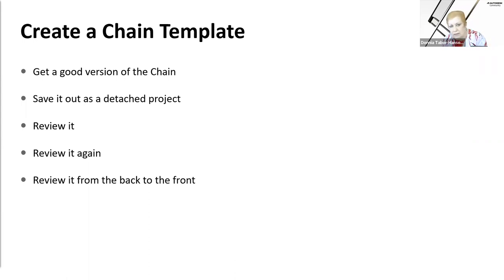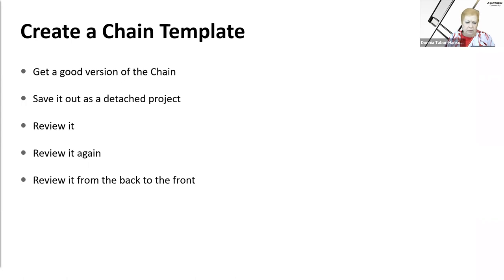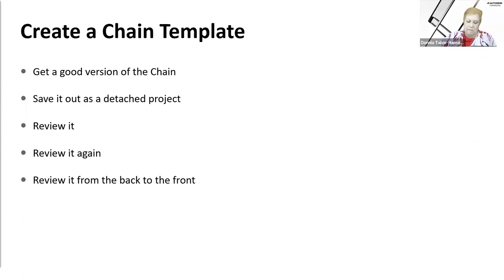Review it from back to front — have you ever done that with a project? Start at the back and ask: is this view still valid? Check your details, elevations, make sure everything is cleaned up. It takes another perspective to review from the back. You can also track that everything is connected correctly — view markers, view names. Check linked files to see if they need to be reviewed in the same manner as your project file.